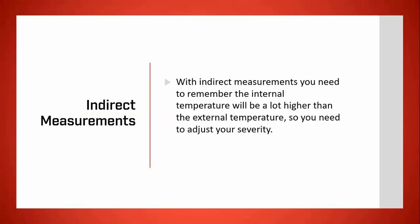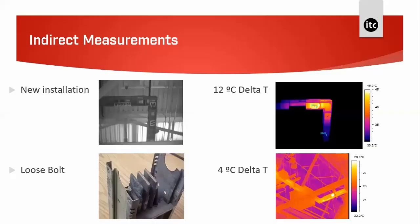With indirect measurements, remember that the internal temperature will be much higher than the external temperature — so we need to adjust our severity criteria if we cannot overcome the indirect nature of our survey. Looking at these two busbar installations, the camera is doing a good job picking up elevated temperature. We can measure a delta T, but the heating source may be some distance away, making it difficult to estimate the internal temperature accurately.